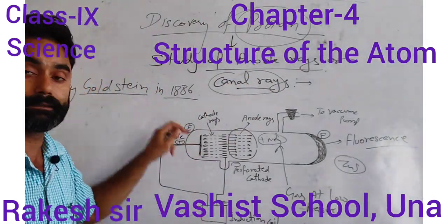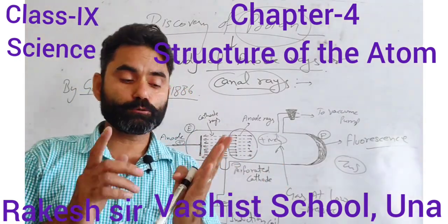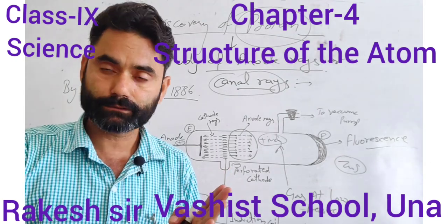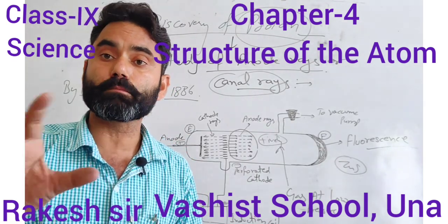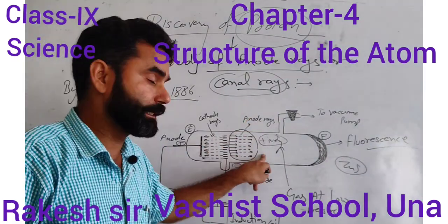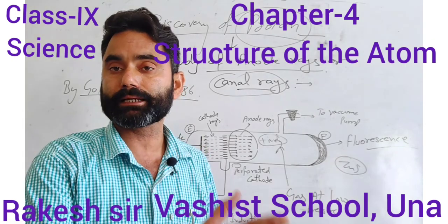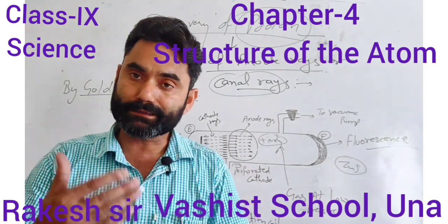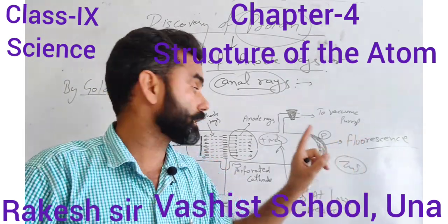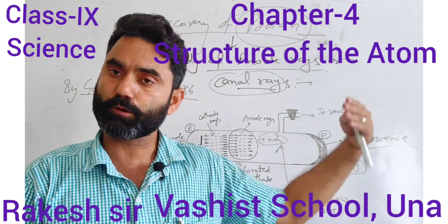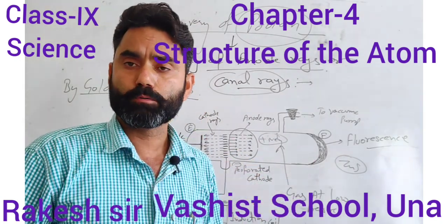In this manner, Goldstein discovered the second subatomic particle — the proton. There were only two properties which were different from cathode rays. One is the charge: the charge of these radiations is positive. Second, the mass of these radiations depends on the nature of the gas present inside the discharge tube, unlike cathode rays.